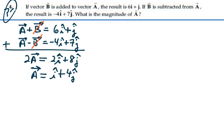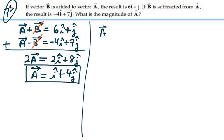Okay, that's our vector A. We want the magnitude of that vector. Well, the magnitude of A will be the square root of its components. It's equal to 1 squared plus 4 squared.